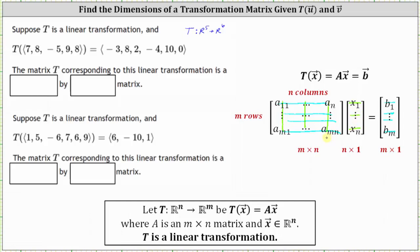This is because in order for matrix multiplication to be defined, the number of columns in the first matrix must equal the number of rows in the second matrix. So in this general case, this linear transformation is a mapping from Rn to Rm, because the vectors in the domain have n components and the vectors in the co-domain have m components.